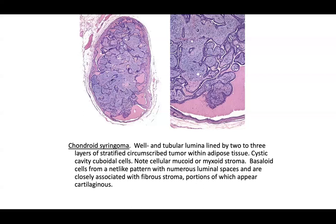If chondroid syringoma is in the answer choices and you see a chondroid hue with solid and cystic areas, it'll be hard not to choose it — especially with eccrine secretion. The differential includes hidradenoma papilliferum (well-circumscribed, may have plasma cells) and syringocystadenoma papilliferum. Hidradenoma papilliferum is typically not as deeply situated and lacks the chondroid stroma.